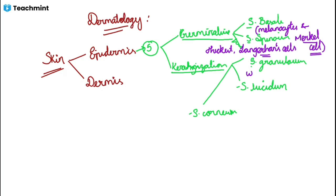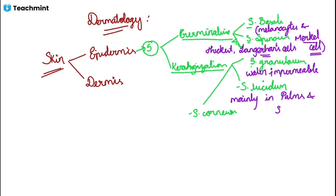Stratum granulosum has a specific function: it is water impermeable — it won't allow water to pass inside or outside. Then comes stratum lucidum, which is mainly seen in the palms and soles. And at last comes stratum corneum, which is the most superficial layer. This covers the epidermis.